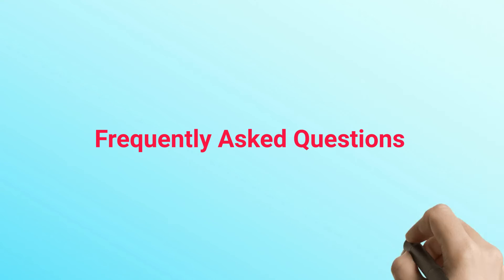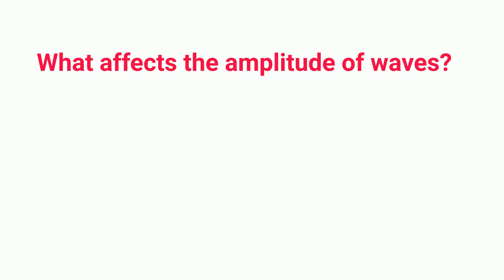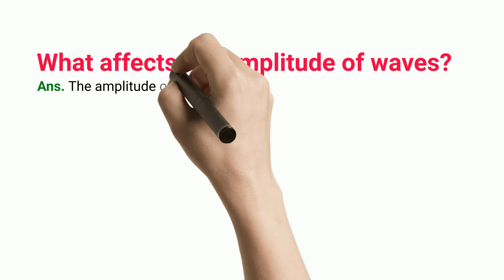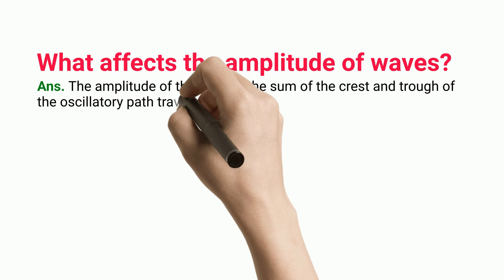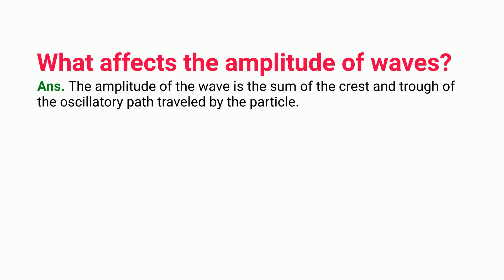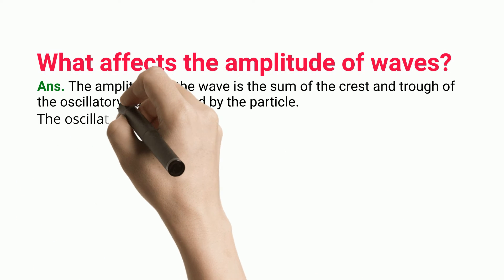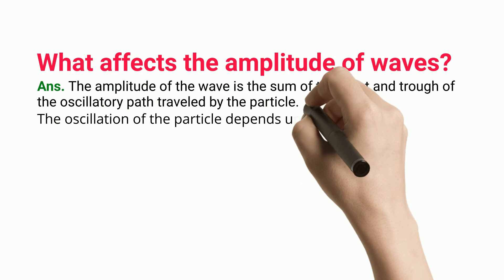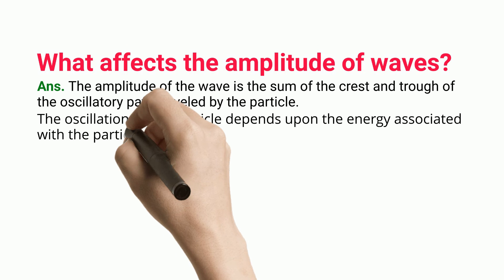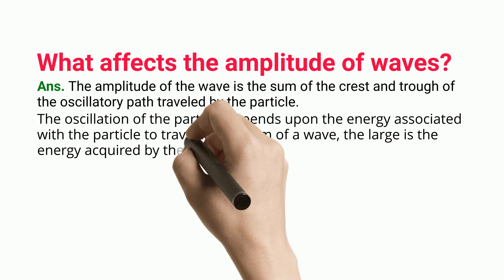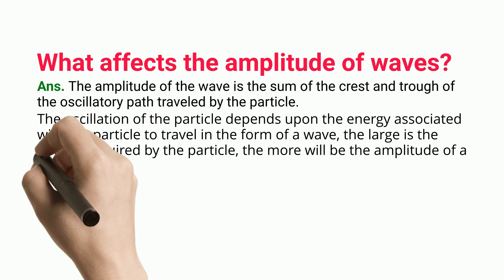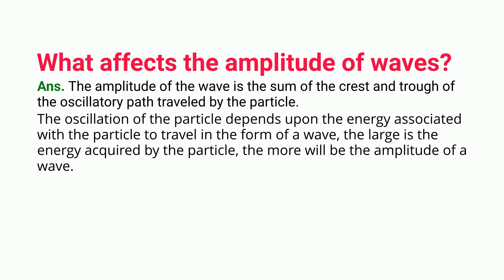Frequently Asked Questions. What affects the amplitude of waves? The amplitude of the wave is the sum of the crest and trough of the oscillatory path traveled by the particle. The oscillation of the particle depends upon the energy associated with the particle to travel in the form of a wave. The larger the energy acquired by the particle, the more will be the amplitude of the wave.